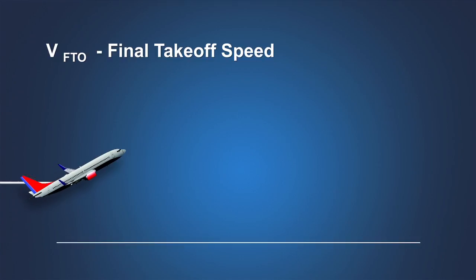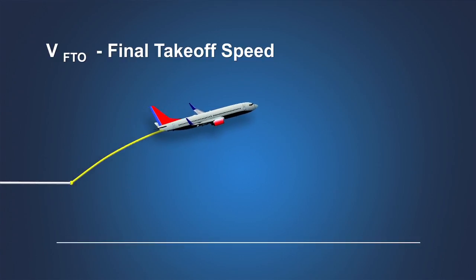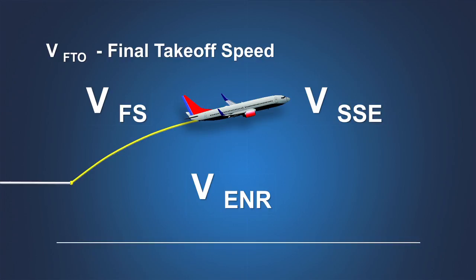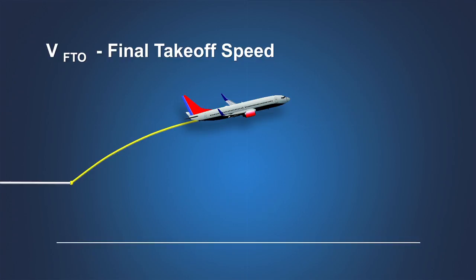Additional climb gradient capability is required for airplanes with three or four engines. Over the years, the airspeed flown during the final segment has been referred to by a number of different terms. You may be familiar with VFS, VENR, or VSSE. In 2002, FAA incorporated the term VFTO, or final takeoff speed, into the certification rules to identify the airspeed to be flown in the final segment. This speed provides an adequate margin above the stall speed in the clean configuration.